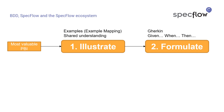The second phase in the BDD process is the formulation phase. This is where the examples that are created in the previous phase are turned into a more formalized language. Typically this is done using the Gherkin syntax, also known as the given-when-then syntax.